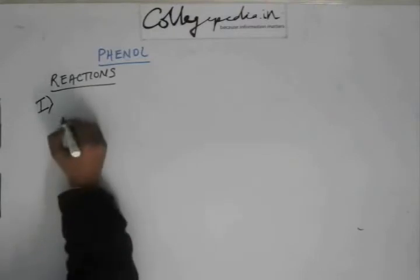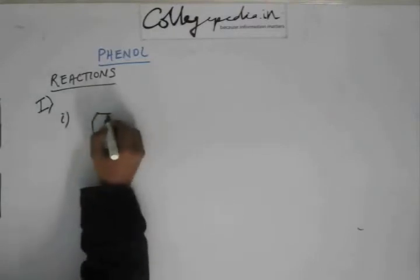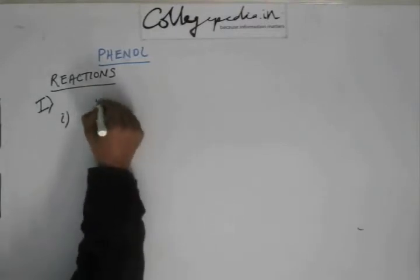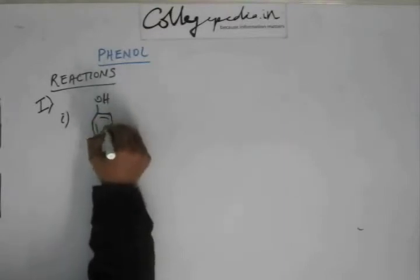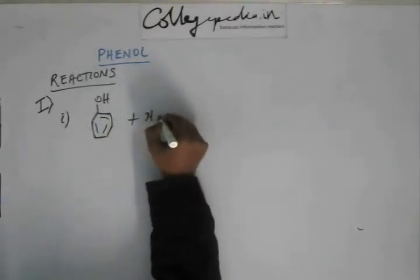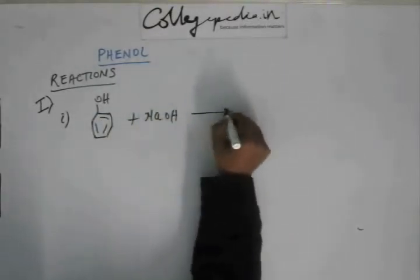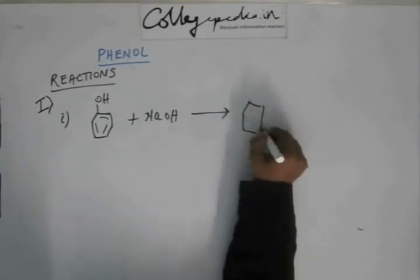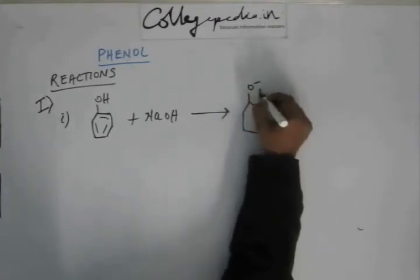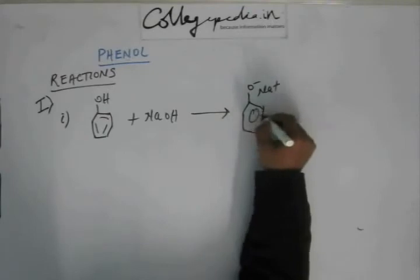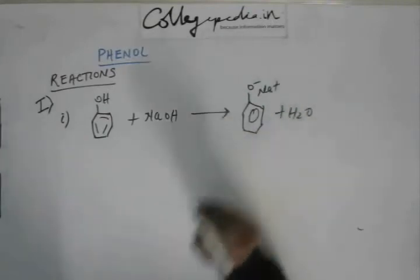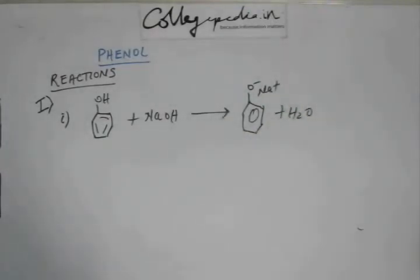The first will be simple acid-base reaction. You have phenol, you take a base and H+ will be abstracted and phenoxide ion will be formed and water will be formed. This is simple acid-base reaction, nothing else, but hydrogen is being removed in this kind of reaction.